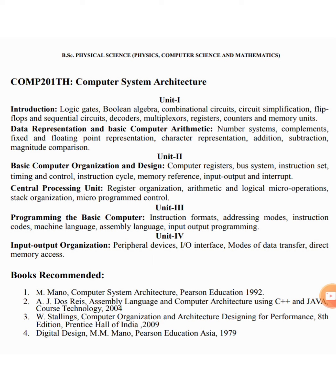The first core subject from computer science is Computer System Architecture. The subject code is COMP201TH and it has four units. Unit 1 covers introduction to digital electronics and data representation and basic computer arithmetic. Unit 2 covers basic computer organization and design along with the central processing unit. Unit 3 covers programming and basic computer. Unit 4 covers input-output organization. The recommended textbook we will follow is Computer System Architecture by Maurice Mano, Pearson Education.